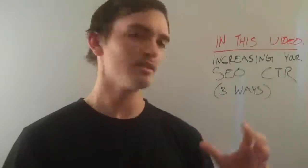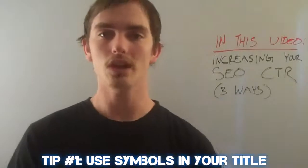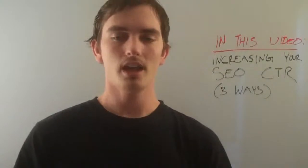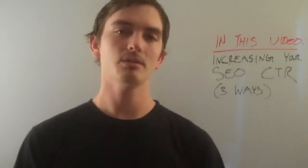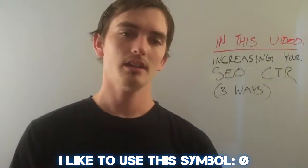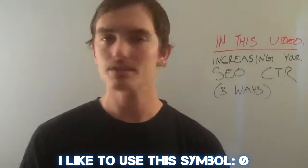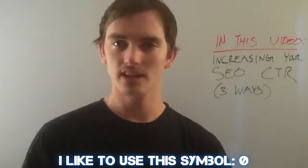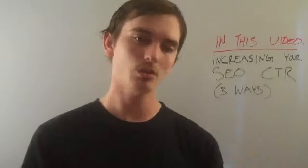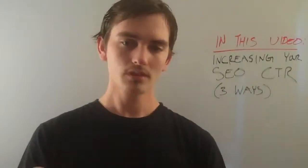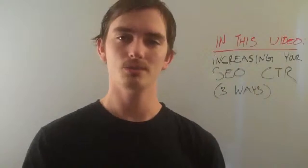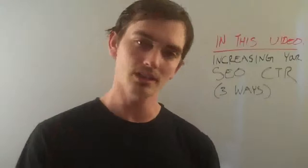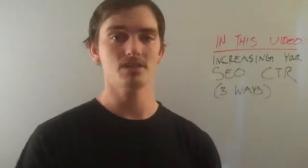The first method is to insert symbols into your headline and possibly your description. I mostly do this for the headline, and what it does is when you insert a symbol into your headline, it makes it stand out. It can't just be any symbol, but there are a few symbols that I use, and when you input them into your headline it actually makes it stand out. Because if you're reading a whole list of results in Google and you see a page with some symbols, that's going to draw your attention and you're more likely to click because it stands out.